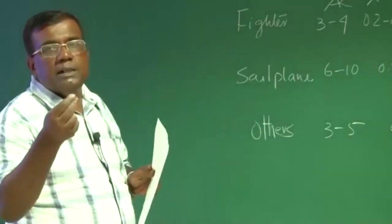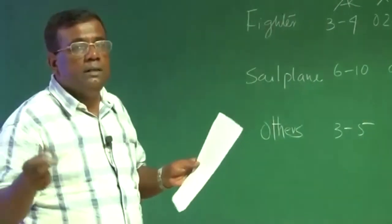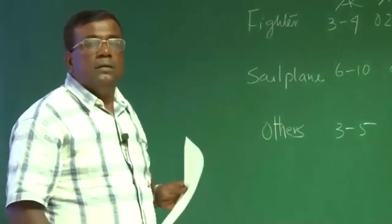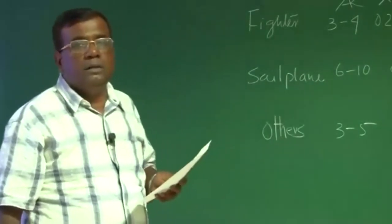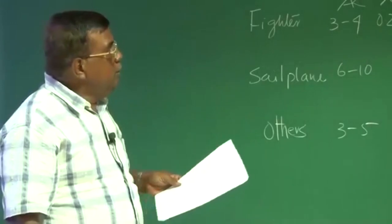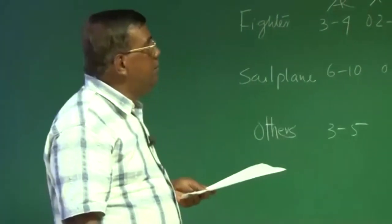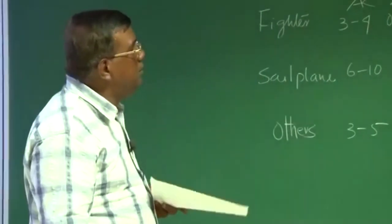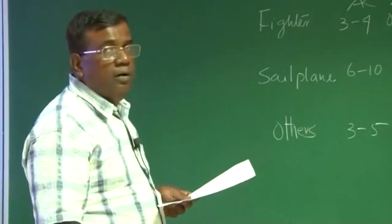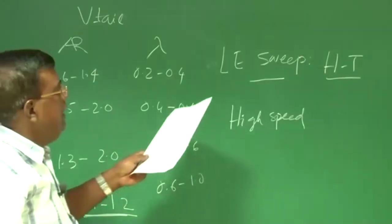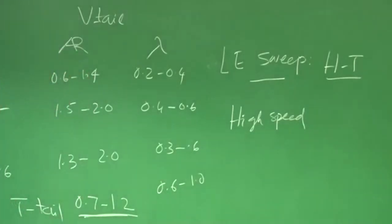So all this optimization goes on. It may be a very small delta for each item, but when you add delta 1, delta 2, delta 3, the total delta may be really worthwhile. These numbers give you the background to start conceptualizing a configuration.